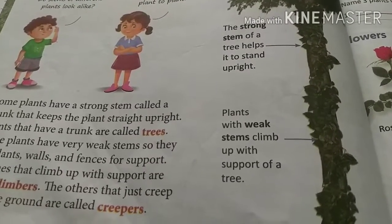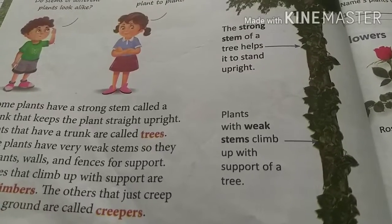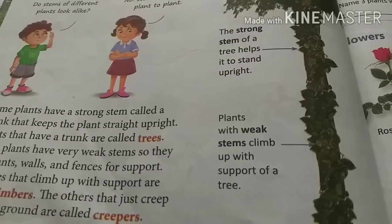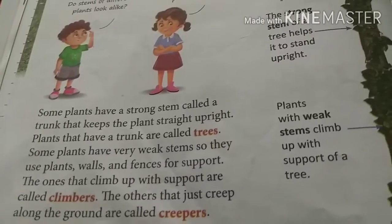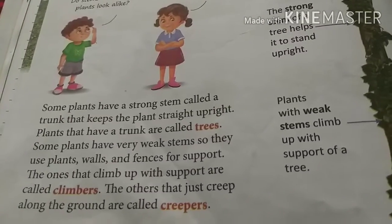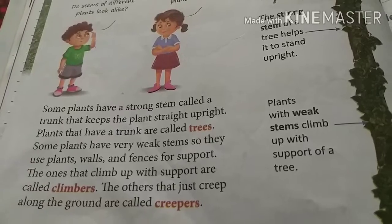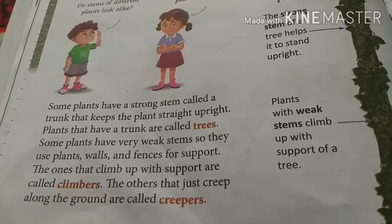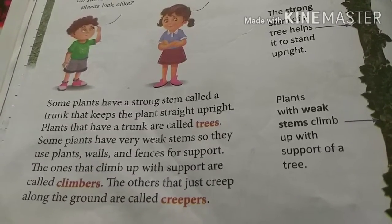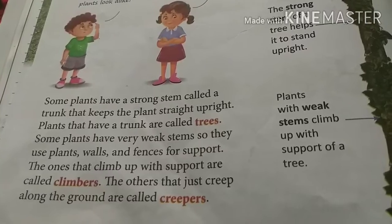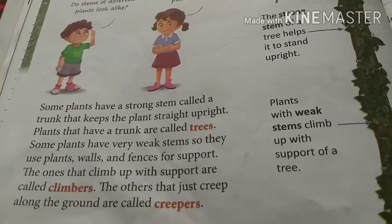Climbers have very weak stems — weak means kamzor. Some plants have thick stems so they can stand straight in the soil. Creepers also have very weak stems, and creepers have roots that grow along the ground. The fruits of creepers are very big, just like pumpkin and watermelon.